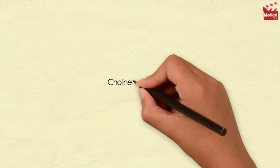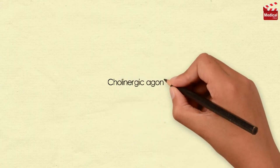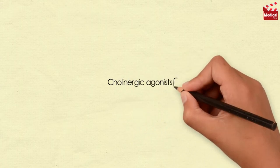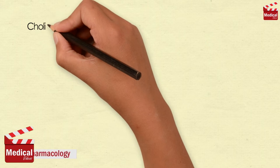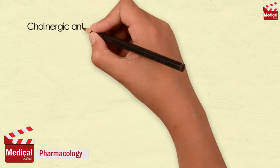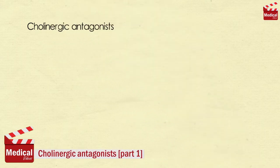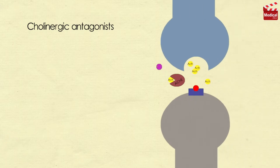In the previous lectures we discussed the cholinergic agonists, so today we'll discuss the cholinergic antagonists. Cholinergic antagonists are those agents that bind to cholinergic receptors — muscarinic or nicotinic — and prevent the effects of acetylcholine and other cholinergic agonists.